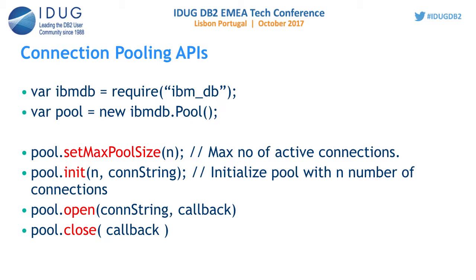The basic API to get a connection from the pool is pool.open, which is similar to ibm_db.open. It accepts a connection string and a callback function which gets executed once pool.open returns the connection. The last API is pool.close. Once your application is done with all connections and you need to shut down, call pool.close. This closes all connections from the pool, terminates all connections, frees all memory, and destroys the pool.